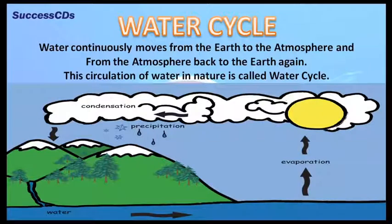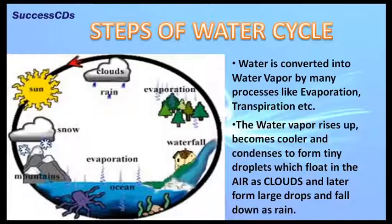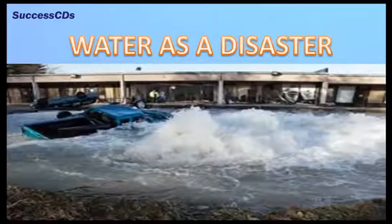Water continuously moves from the earth to the atmosphere and back again — this circulation is called the water cycle. First, water is converted into water vapor through processes like evaporation and transpiration. The water vapor rises, becomes cooler, and condenses to form tiny droplets which float in the air as clouds. Later these form large drops and fall down as rain. Water is very important for our survival.